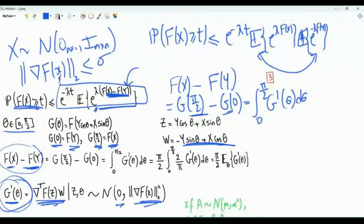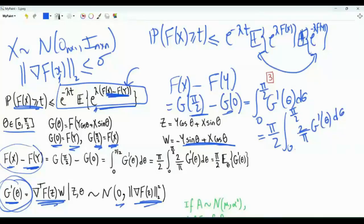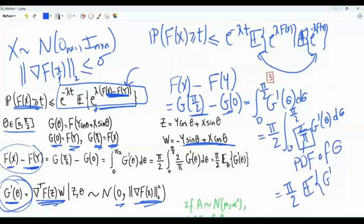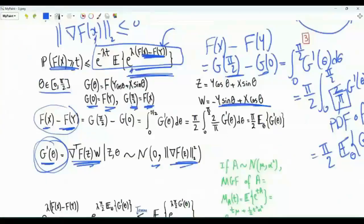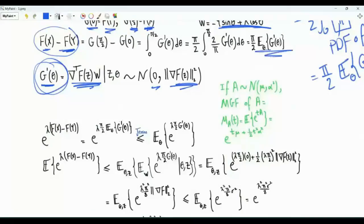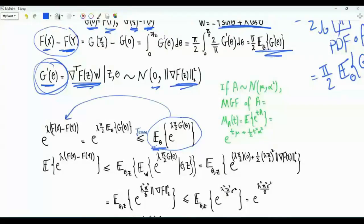Multiplying and dividing by pi/2, we write this as pi/2 times the integral of (2/pi) g'(theta) d theta. Since 2/pi is the PDF of the uniform distribution on [0, pi/2], this integral is the expectation of g'(theta) with respect to theta. So e^{lambda(f(x) minus f(y))} equals e^{lambda pi/2 times E_theta[g'(theta)]}. Applying Jensen's inequality, since the exponential is convex, this is upper bounded by the expectation of e^{lambda pi/2 times g'(theta)}.